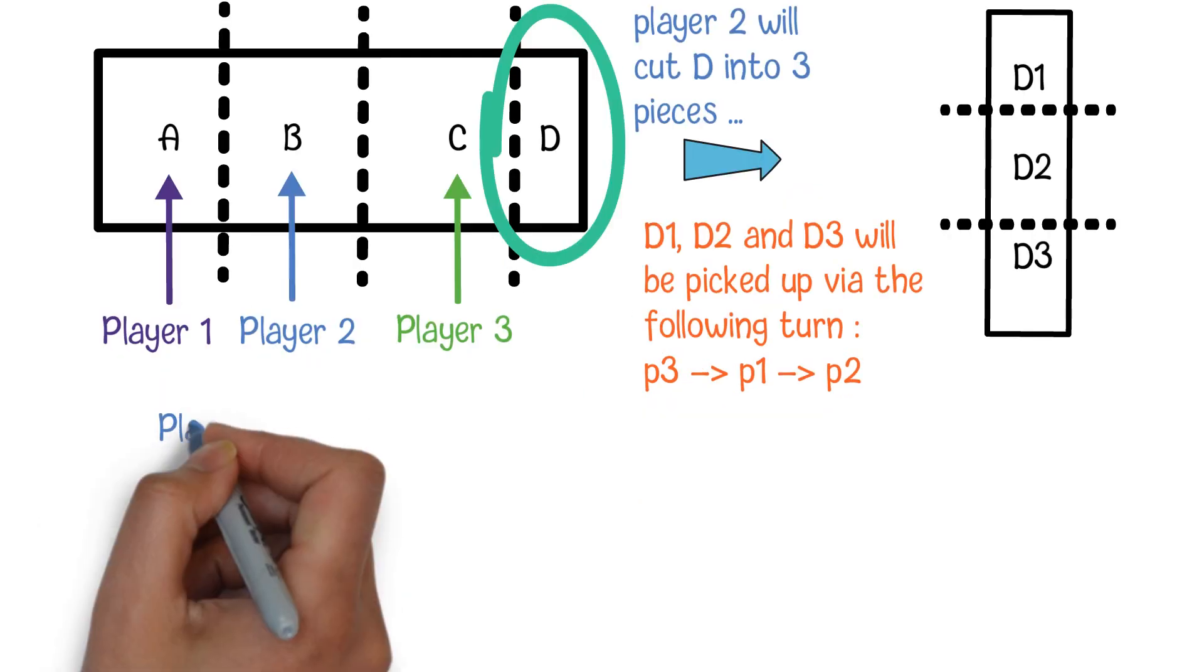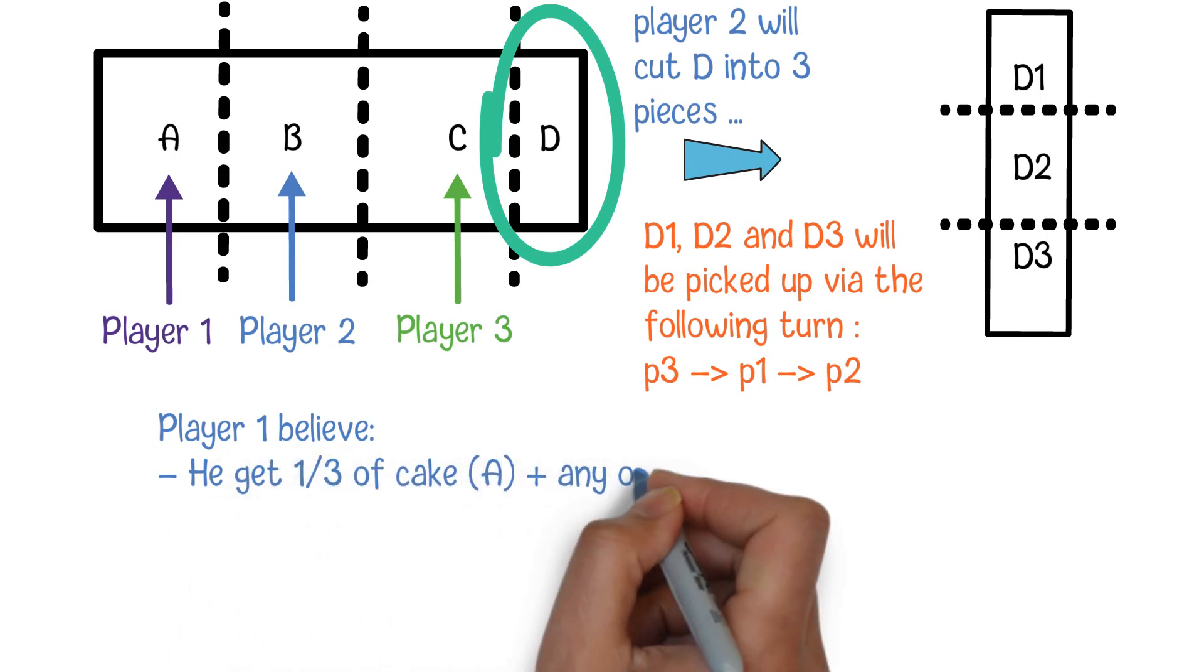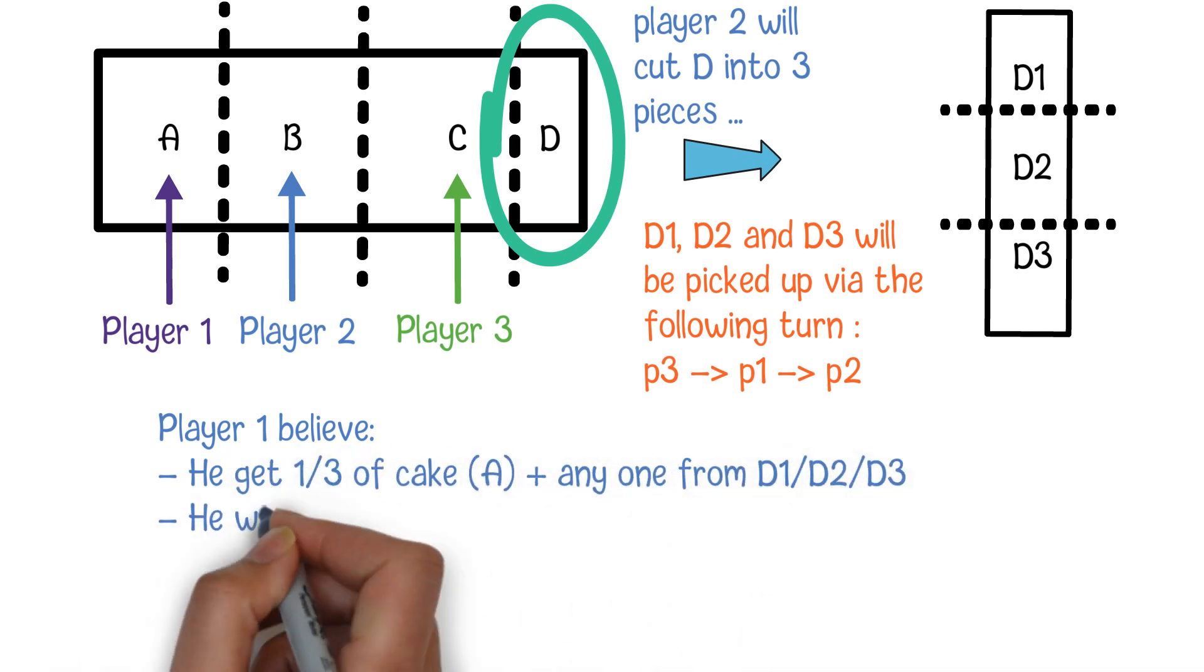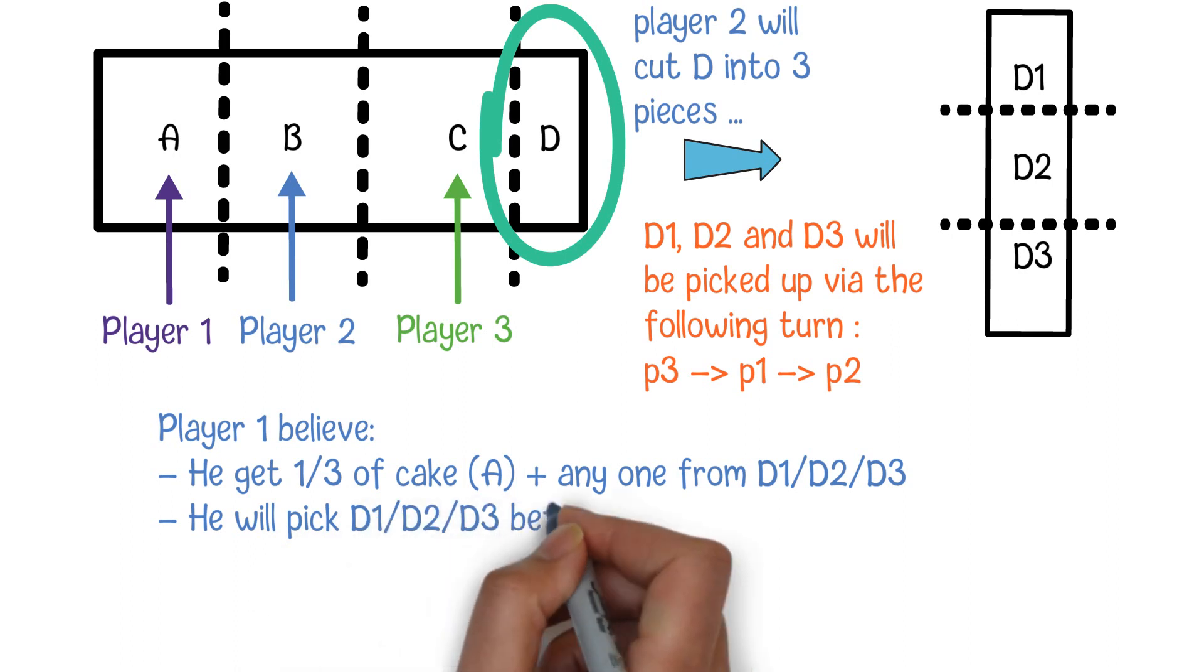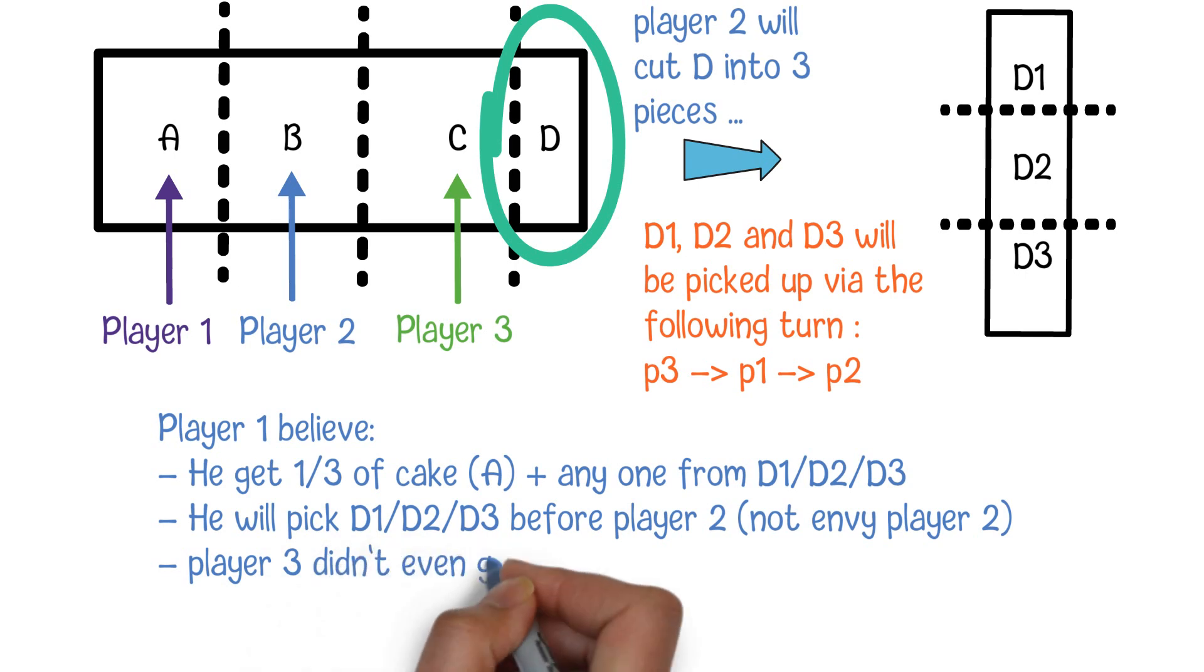From player 1's perspective, he will finally get one-third of the cake plus one of D1, D2 or D3. Since he will pick up those small pieces before player 2, he will not envy player 2. Of course, he will not envy player 3 either because, from player 1's point of view, player 3 didn't even get one-third of the cake.